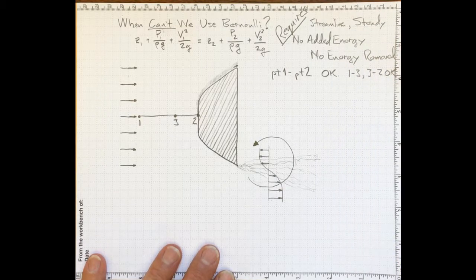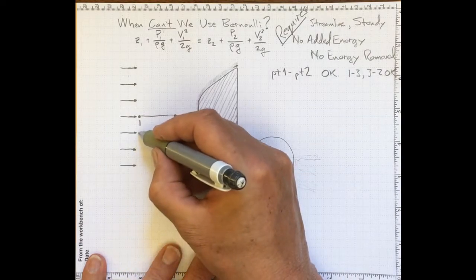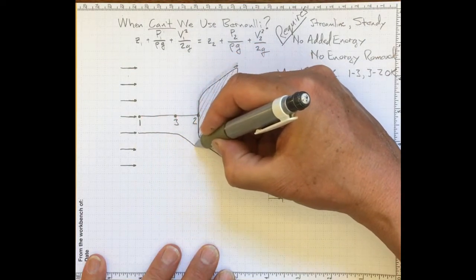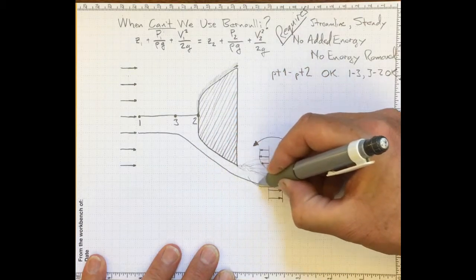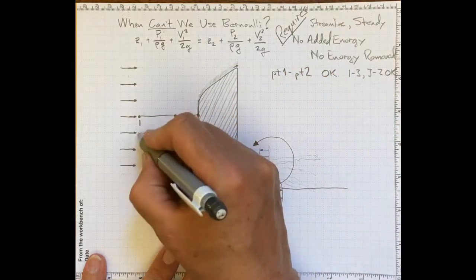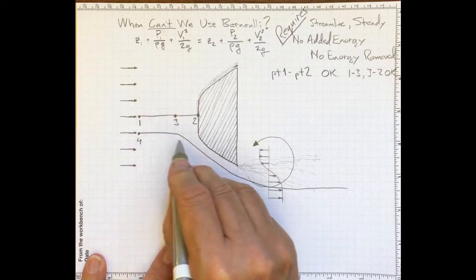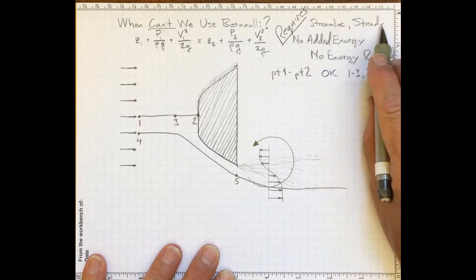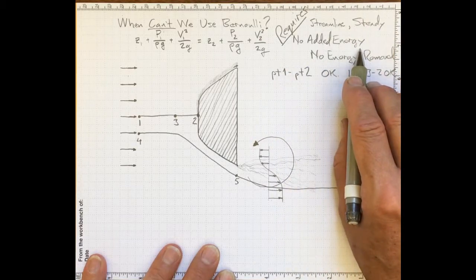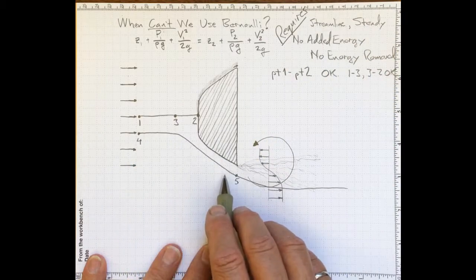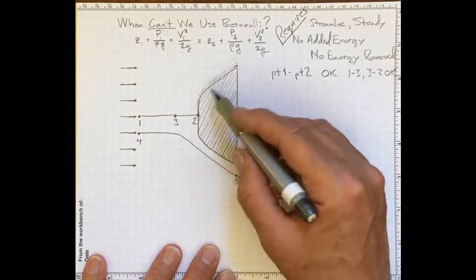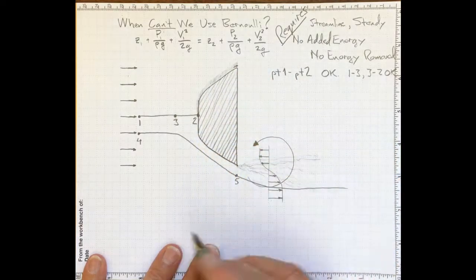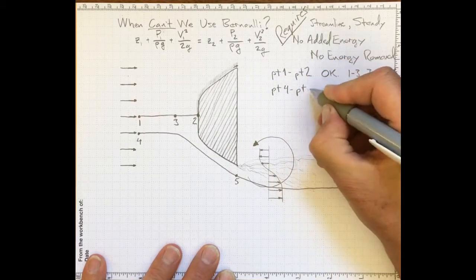Now how about another streamline that's a little further away here? Say one that goes off from here and flows in like that, it's diverted by the body and the flow accelerates, and then it follows a path something like that. We could call this location four, and following along this path to location five, we're following a streamline, we're in steady flow, there's been no added energy, just the flow is accelerating and the pressure will be dropping, and there's no energy removed. Because we're well outside this boundary layer area where we've got this friction slowing down the flow close to the wall. So from four to five, we're going to be okay.